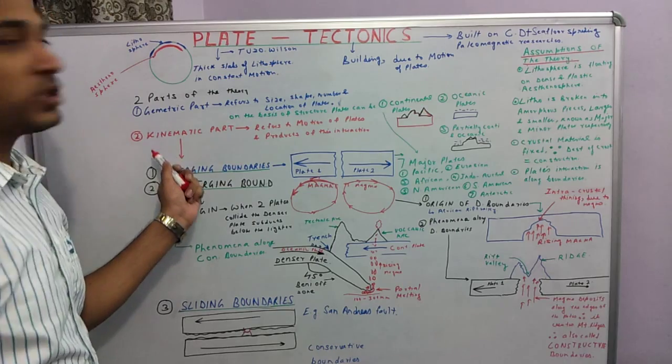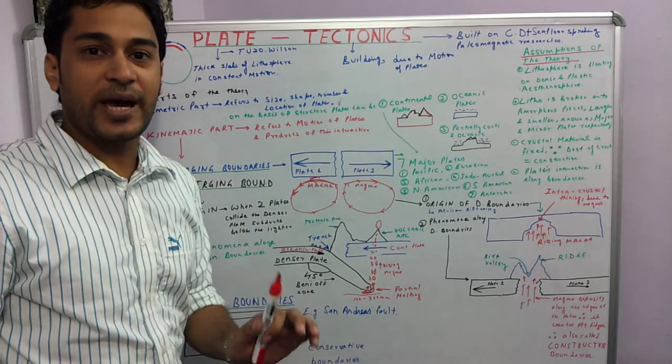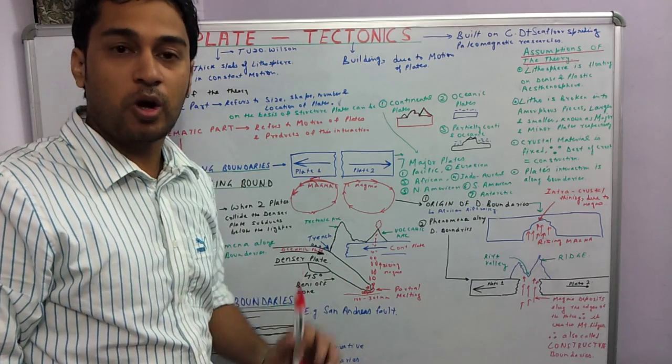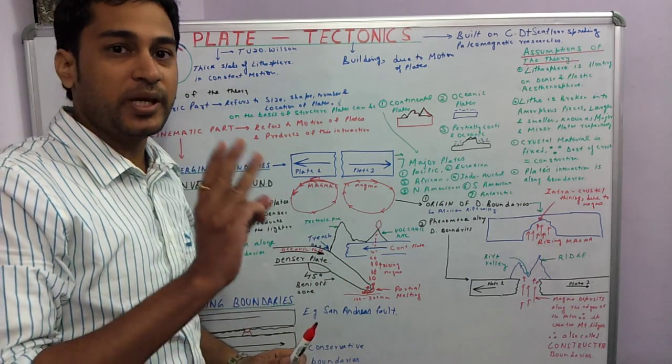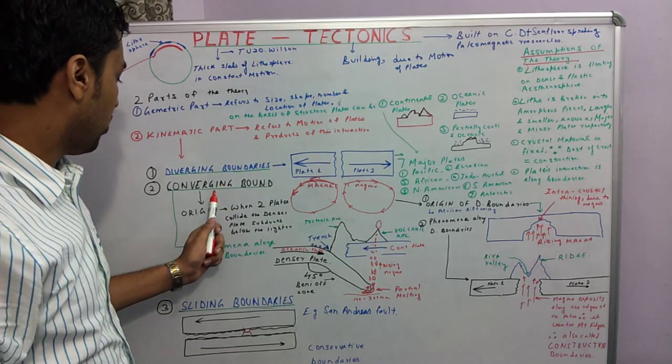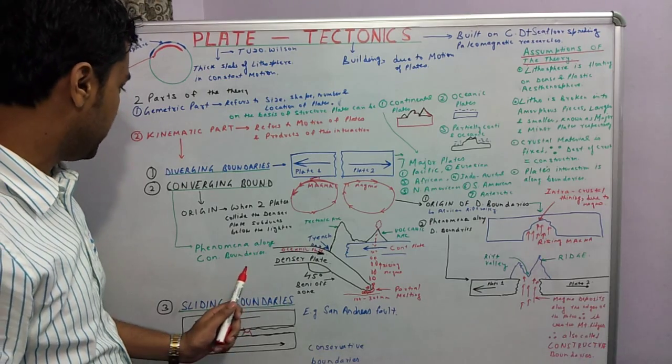Now we will come to the most important part of the theory which is called the kinematic part. This part refers to the motion of the plates. According to this part, there are three kinds of plate boundaries: the diverging plate boundaries, the converging plate boundaries, and the sliding plate boundaries.